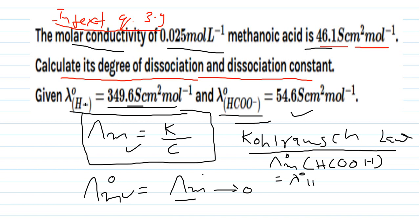The limiting molar conductivity of proton and limiting molar conductivity of HCOO⁻ (methanoate ion) added together will give the limiting molar conductivity of formic acid (methanoic acid). This way, we can find the limiting molar conductivity of methanoic acid using Kohlrausch's law, which states that we take the sum of the constituent ions.